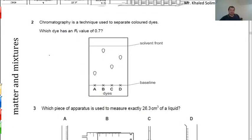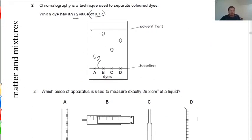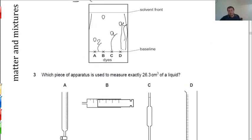The next question involves a chromatography process. Which dye has an RF value of 0.7? RF equals distance covered by the component over distance covered by the solvent. Look at which spot's distance over the total solvent distance gives 0.7. That particular distance over the total gives 0.7 — the answer is letter D.